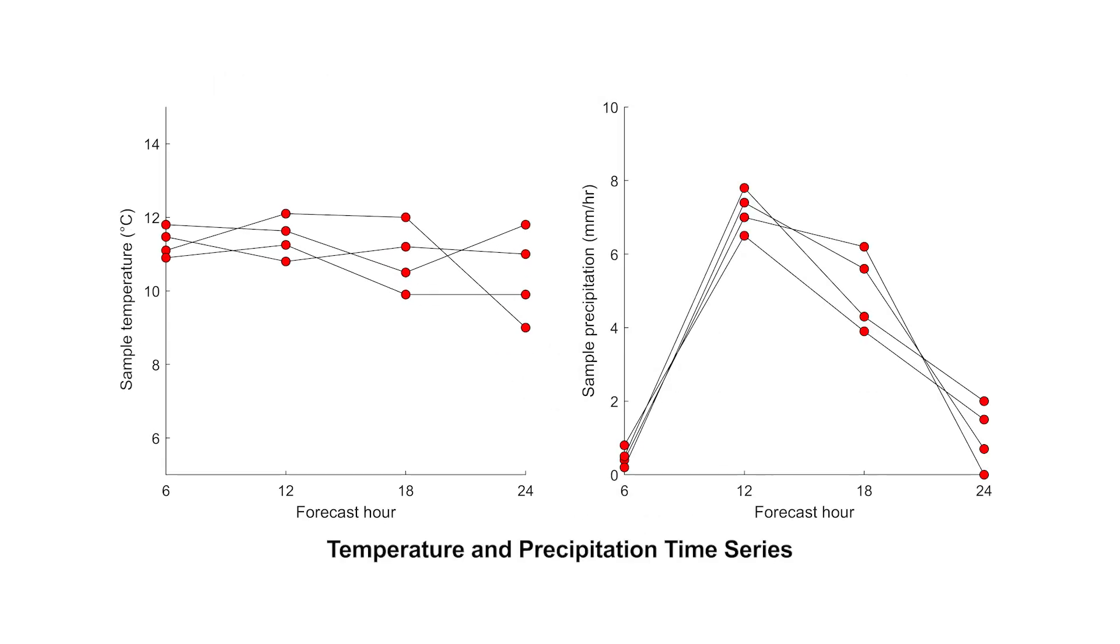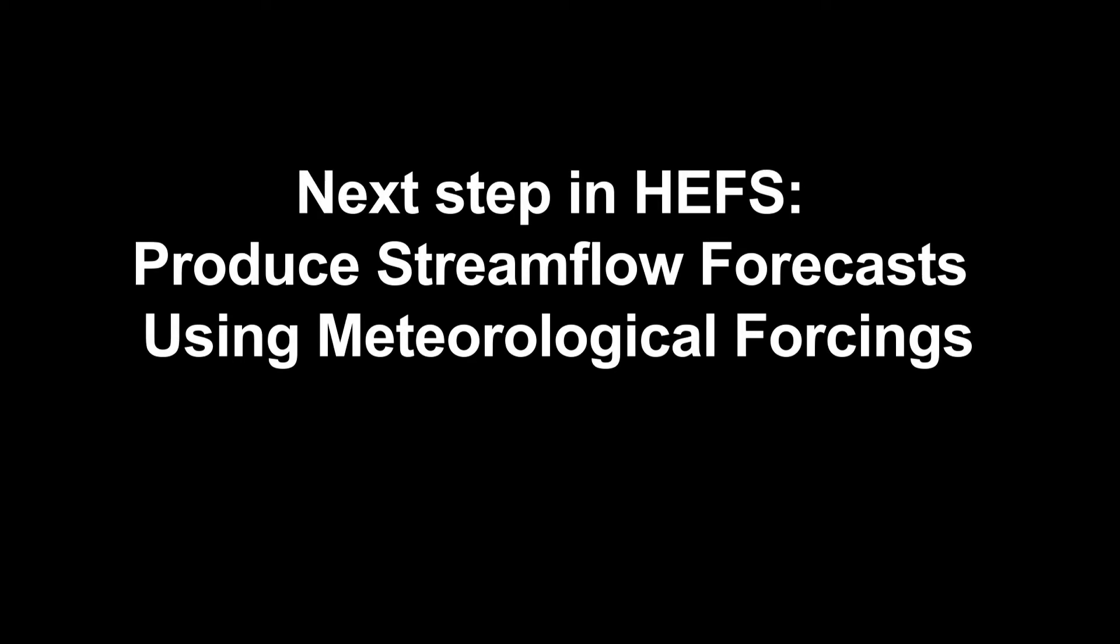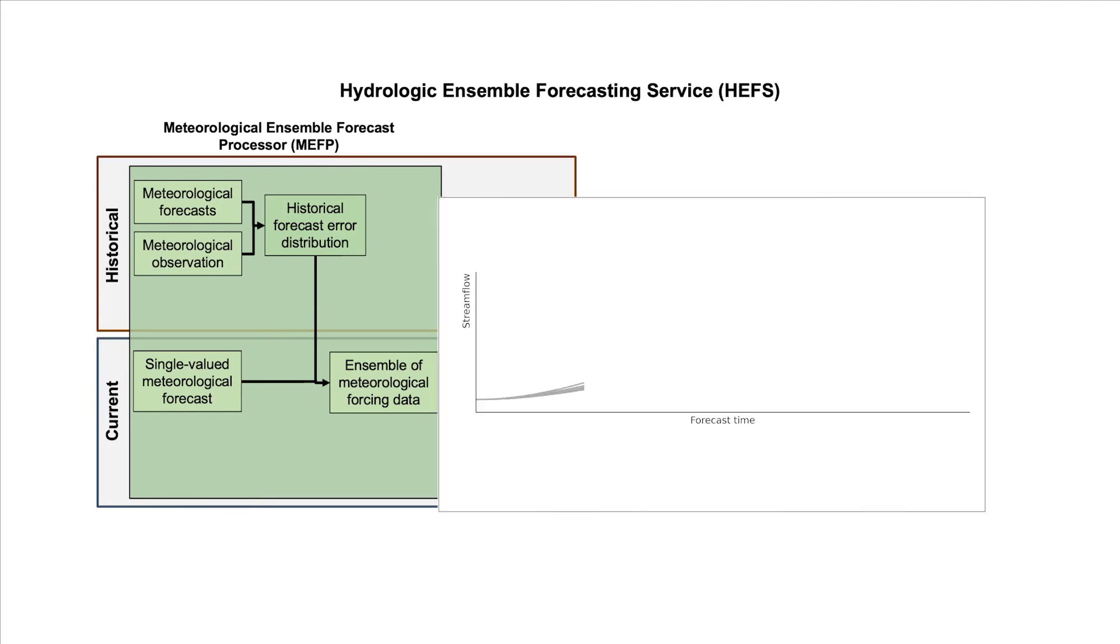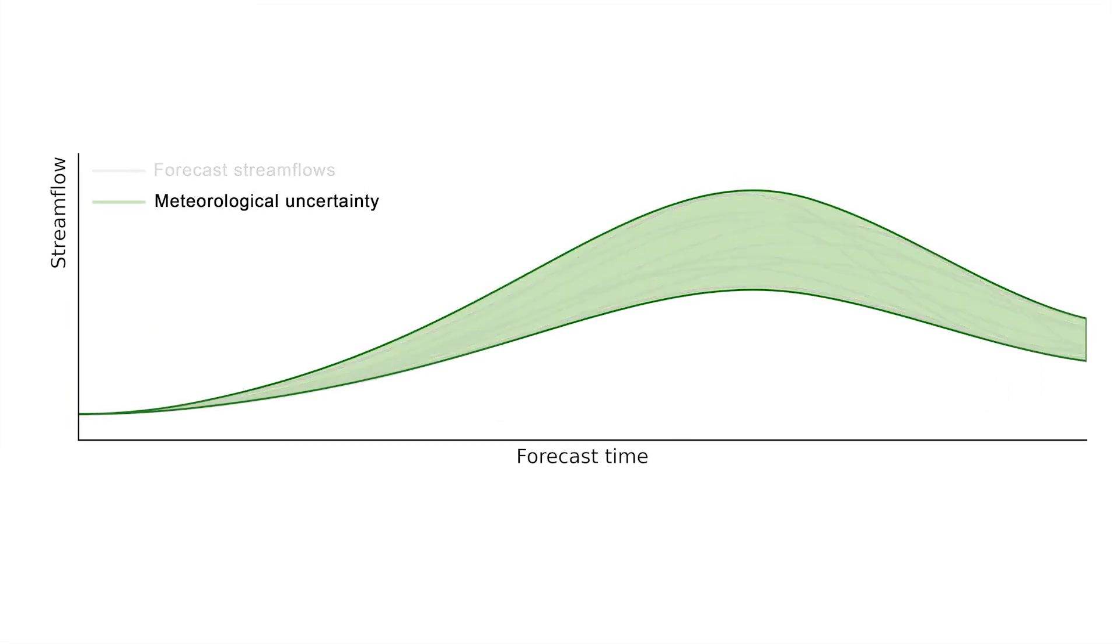These are the output of MEFP and the inputs for the next step of HEFS, which is the hydrological model. After running the hydrological model using each time series produced by the MEFP, the HEFS produces an ensemble streamflow forecast. These ensemble members now reflect a range of streamflow outcomes based on the historical meteorological forecast uncertainty.